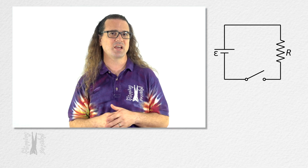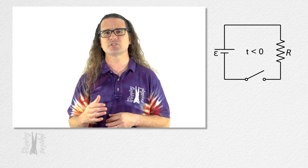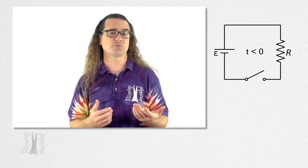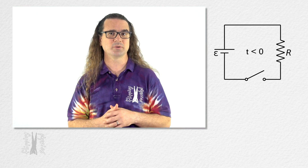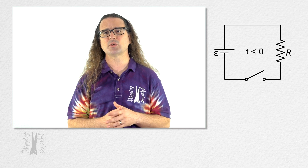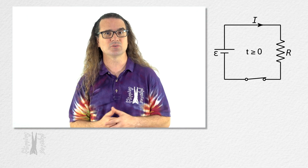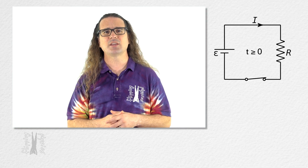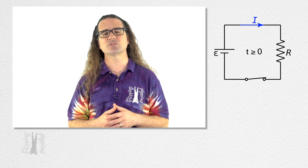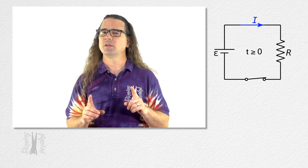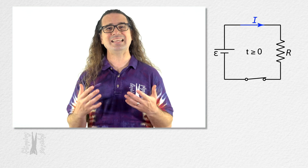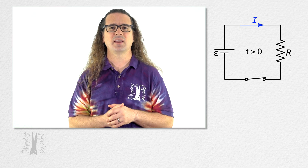Before time t equals zero, the switch in the circuit is open and zero current flows through the open loop. At time t equals zero, the switch is closed and remains closed. A current i, which is clockwise from this perspective, is now in the circuit. Up to this point, we have assumed the current appears instantaneously in the circuit.